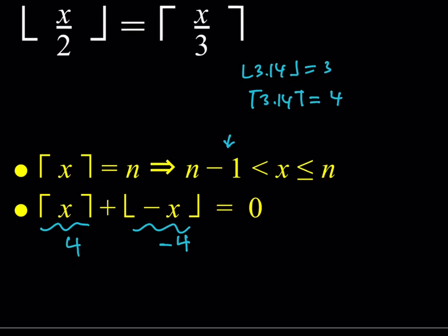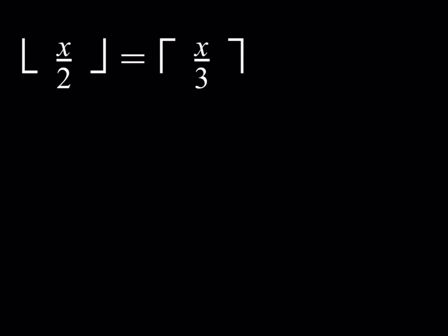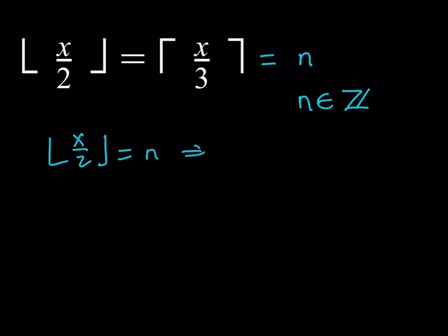Given those properties, let's take a look at the problem. We have the floor of x over 2 equal to the ceiling of x over 3. As almost always, we're going to set this equal to an integer n. We know n is an integer, and we're going to solve for possible values of n, since our goal is to find x but we also need boundaries for n. Using the floor function part, since the floor of x over 2 equals n, this implies that x over 2 is between n and n plus 1, with equality on the lower side.